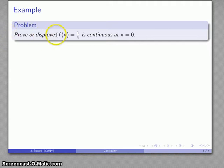Prove or disprove f of x equals 1 over x is continuous at x equals 0. So maybe the function is continuous, maybe it's not. Well let's take a look at it.